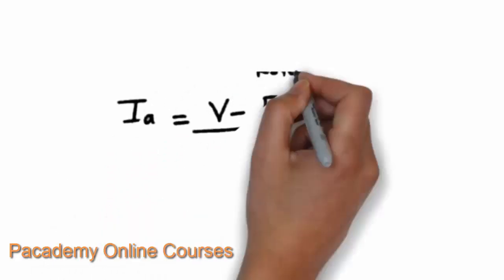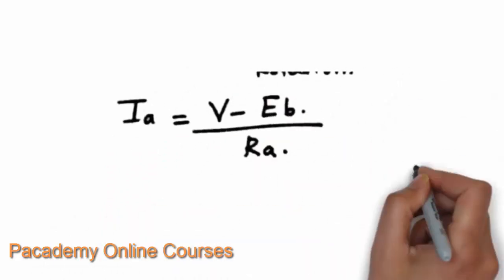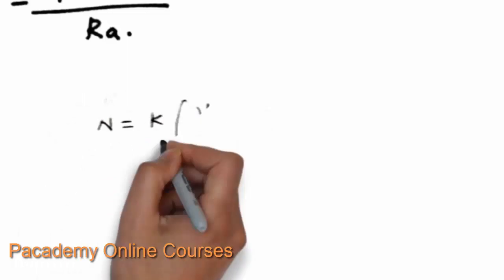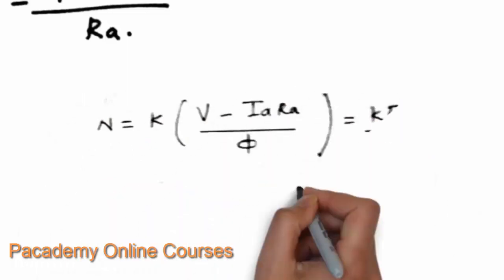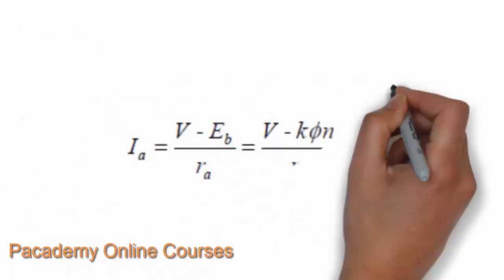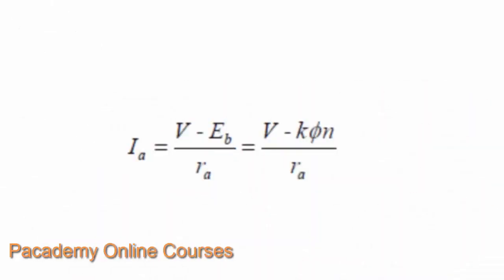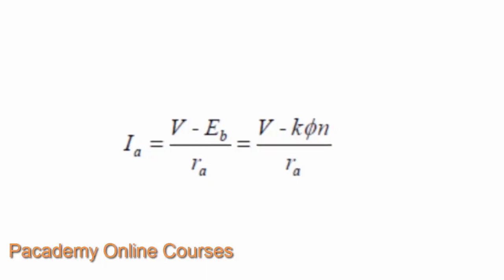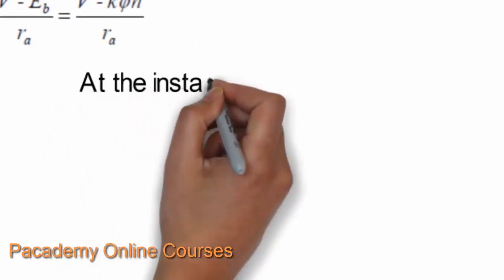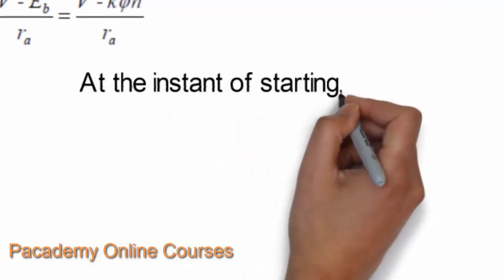The speed of any DC motor is directly proportional to the back EMF and inversely proportional to the flux. The armature current is given by (V minus E_B) divided by R_A — that is, the current flowing through the motor is directly proportional to the supply voltage minus the back EMF, divided by the armature resistance. This can also be written as (V minus E_B) divided by R_A, where speed is directly proportional to back EMF and inversely proportional to flux.